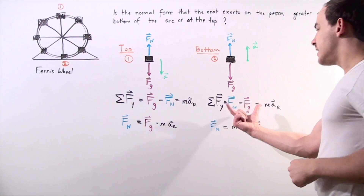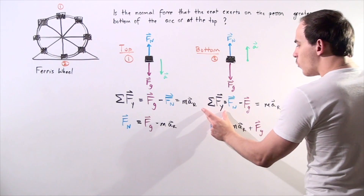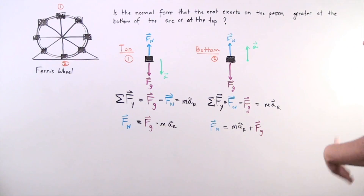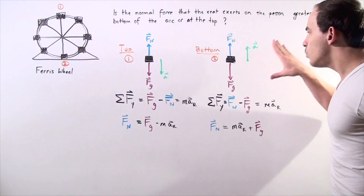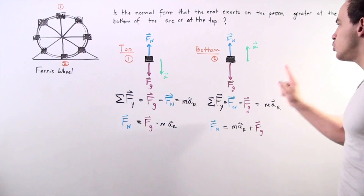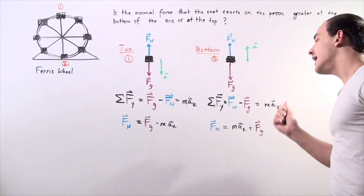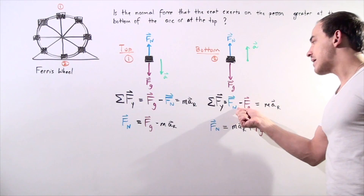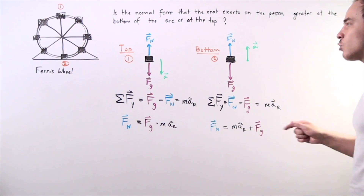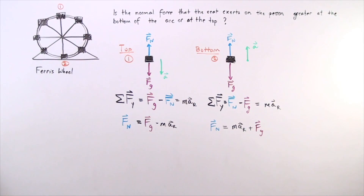For the bottom case, the sum of all forces acting along our y-axis — with upward chosen as the positive direction — gives us: the normal force minus the gravitational force equals mass times the radial acceleration of the person.